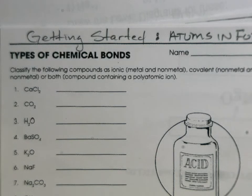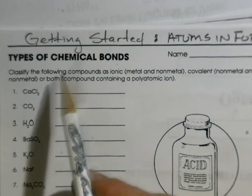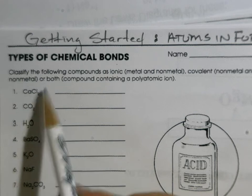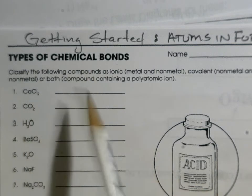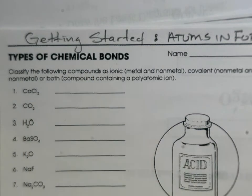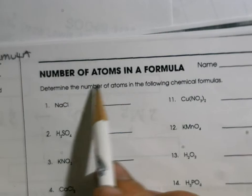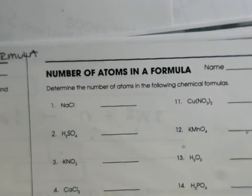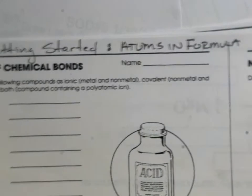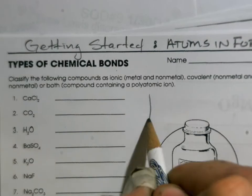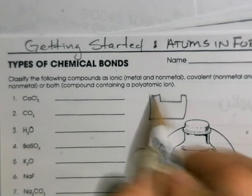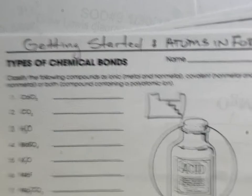Well good afternoon or good evening, ladies and gentlemen. I'm going to go over how to figure out the types of chemical bonds - pretty straightforward - and also next to that, the number of atoms in a formula as we get into there. To begin with, I'm just going to draw a simple little periodic table there, put the zigzag.